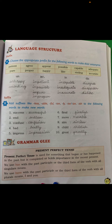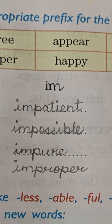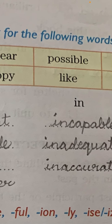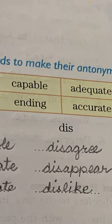Look below — the antonym prefixes given are: 'dis', 'im', 'in', and 'dis' again. In your book, the second column has 'in', the third column also has 'in' — change that second 'in' to 'im'. So the four prefixes are: 'im', 'in', 'in', and 'dis'.